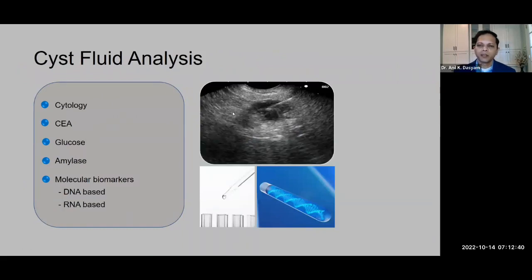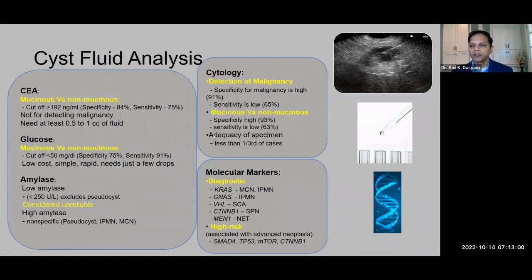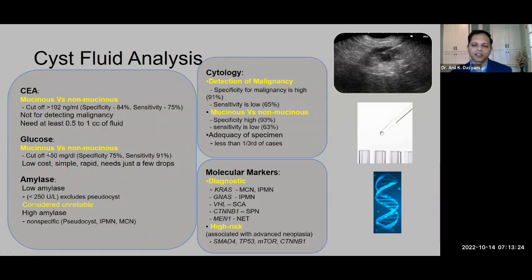When imaging is not enough to determine characterization, we move on to cyst fluid analysis. Cytology is not adequate in the majority of cases, but when adequate, it is very good for detection of malignancy and separating mucinous from non-mucinous lesions. Other biomarkers include CEA and glucose, which help differentiate mucinous from non-mucinous lesions — a high CEA and low glucose is seen in mucinous neoplasms. Amylase can practically exclude pseudocysts when the level is low, but is considered unreliable when high.